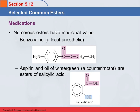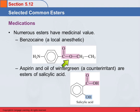Medications — a lot of esters have medicinal values. Benzocaine is an ester. It has a benzene ring, an NH2 group — we haven't learned about those yet — and here's the ester part. Benzocaine is a local anesthetic. And then there's aspirin and oil of wintergreen, which are kind of interesting.